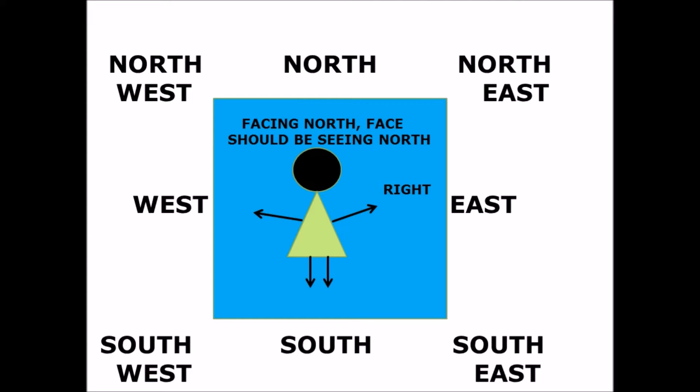To identify north, take a compass. The needle of the compass always points to north. Once you've identified north, stand so that your face is pointing towards north, then stretch your hands. Your right hand will point towards east. The opposite of north is south, and the opposite of east is west. In this way you can figure out all eight directions.